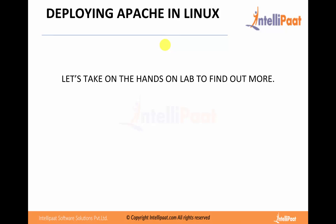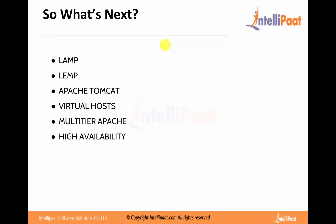Once you are done with this exercise, what we can do next is install a LAMP stack — which comprises Linux, Apache, MySQL, and PHP. PHP is the language, MySQL is the database, and Apache is the web server. You can use them in combination to create a full-fledged website. If you want to use LEMP, that means NGINX in place of Apache. Apache Tomcat is for Java-based websites. We can also configure virtual hosts in Apache to host multiple websites on the same IP address.